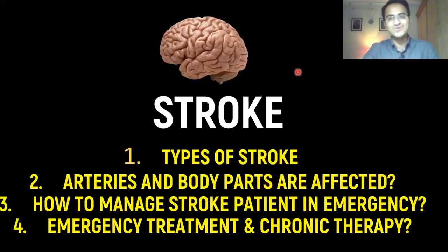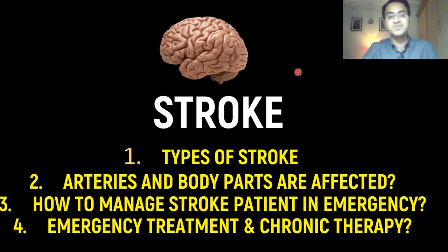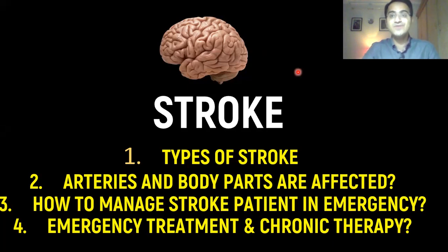Today we are going to talk about stroke. We will talk about different types of stroke, the arteries that supply the brain and what happens if those arteries are blocked, what body parts are affected, how to manage a stroke patient in an emergency, the acute treatment of stroke, and the chronic therapy for stroke patients.